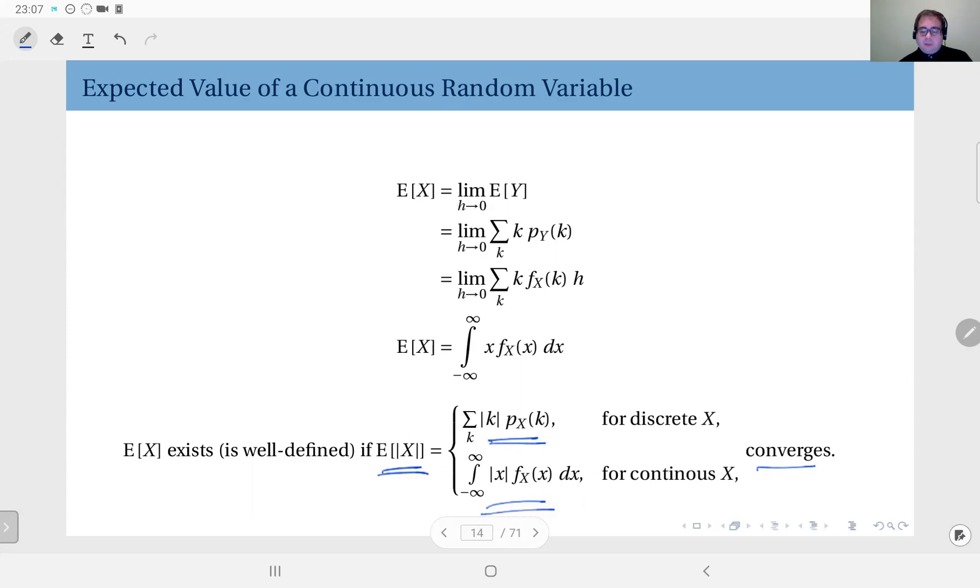If these actually converge, we say that the mean actually is well-defined. And in general, we define here the moments of a random variable.